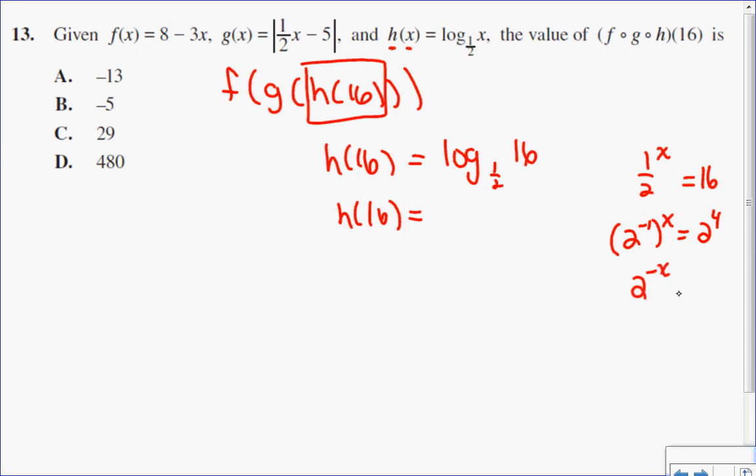So 2 to the negative x equals 2 to the 4, which means that x equals negative 4. So h of 16 is negative 4.